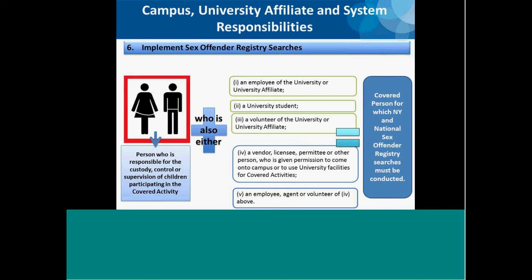This slide provides a graphic representation of the requirement for sex offender registry searches. Part one of the covered person definition, combined with part two — the identification of covered persons by category — indicates that searches must be conducted on all covered persons. However, for the first three categories, the university, university affiliate, or system administration conducts the searches. For categories four and five — third parties and their employees, agents, and volunteers — the third party conducts their own searches.